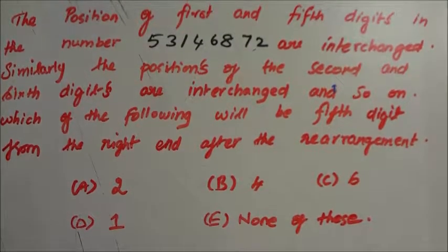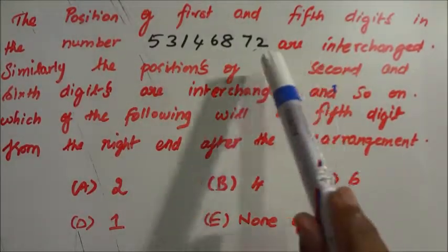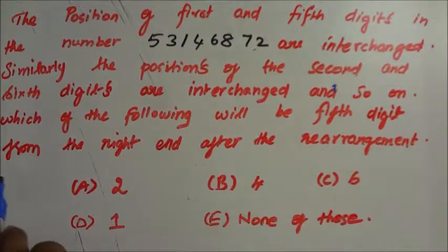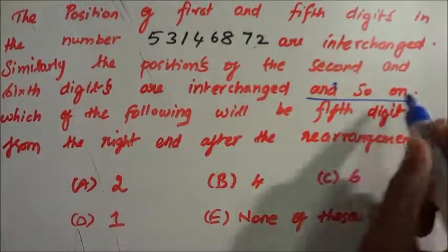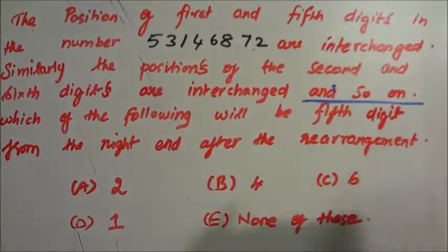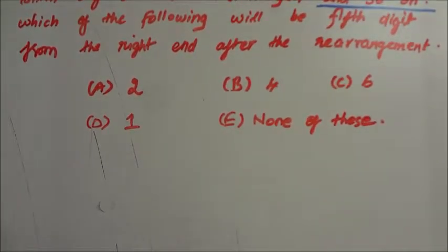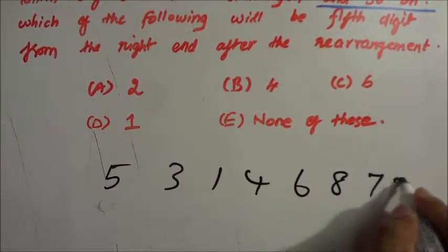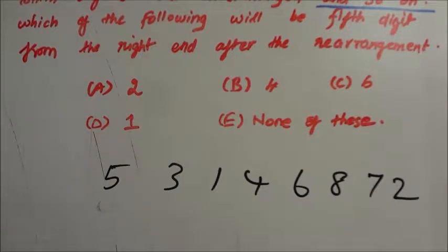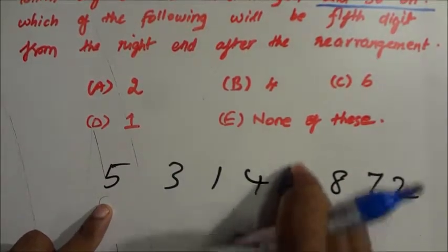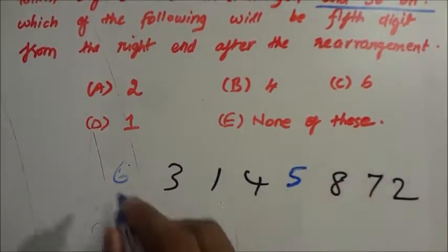The position of first and fifth digits in the number 5 3 1 4 6 8 7 2 are interchanged. Similarly the position of second and sixth digits are interchanged, and so on. Which of the following will be the 5th from the right end after the rearrangement of the number 5 3 1 4 6 8 7 2? So the first and fifth digits are interchanged: 6 and 5 swap positions.